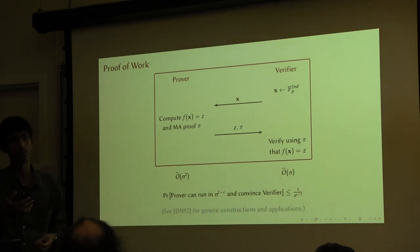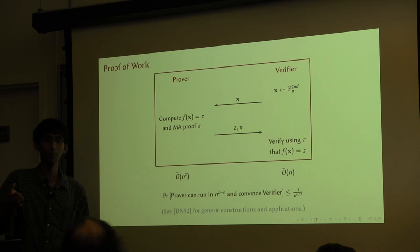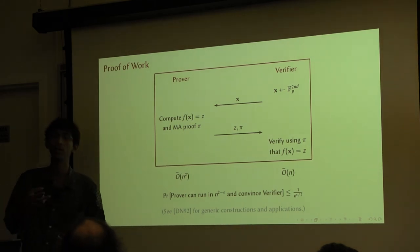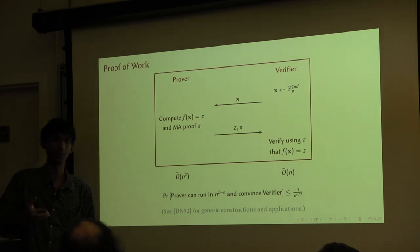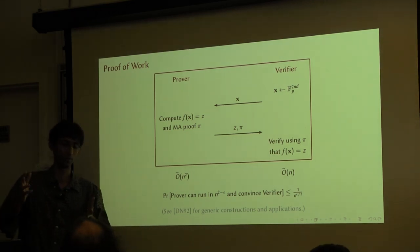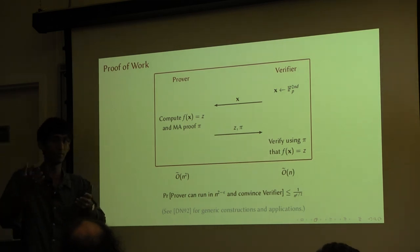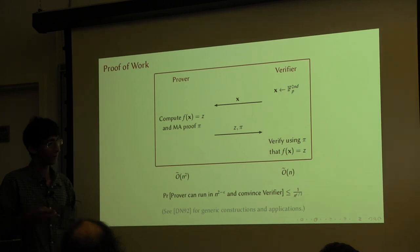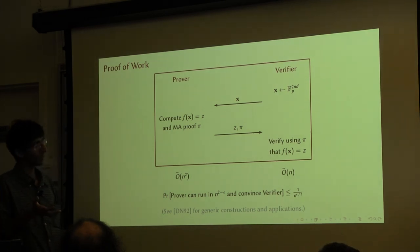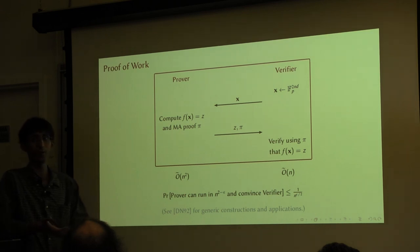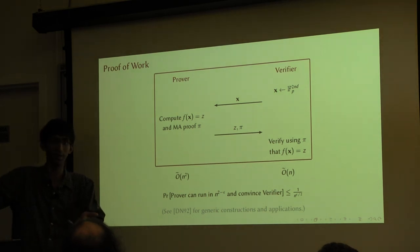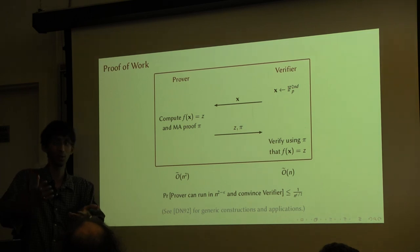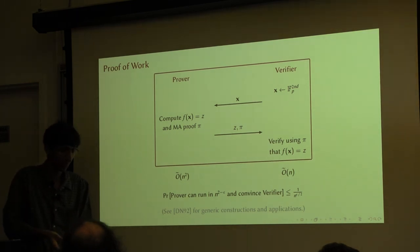Typically in theoretical cryptography, you argue about constructions which are secure against polynomial adversaries. But it makes a lot of sense to consider adversarial models where your adversary is maybe not an n to the 10 time algorithm. Maybe all you care about is that someone who runs in less than n-cubed is not able to break it — maybe that's good enough if n is big enough and n-cubed is already huge. And it may allow you to start with weaker assumptions than what we use right now — perhaps more plausible assumptions.